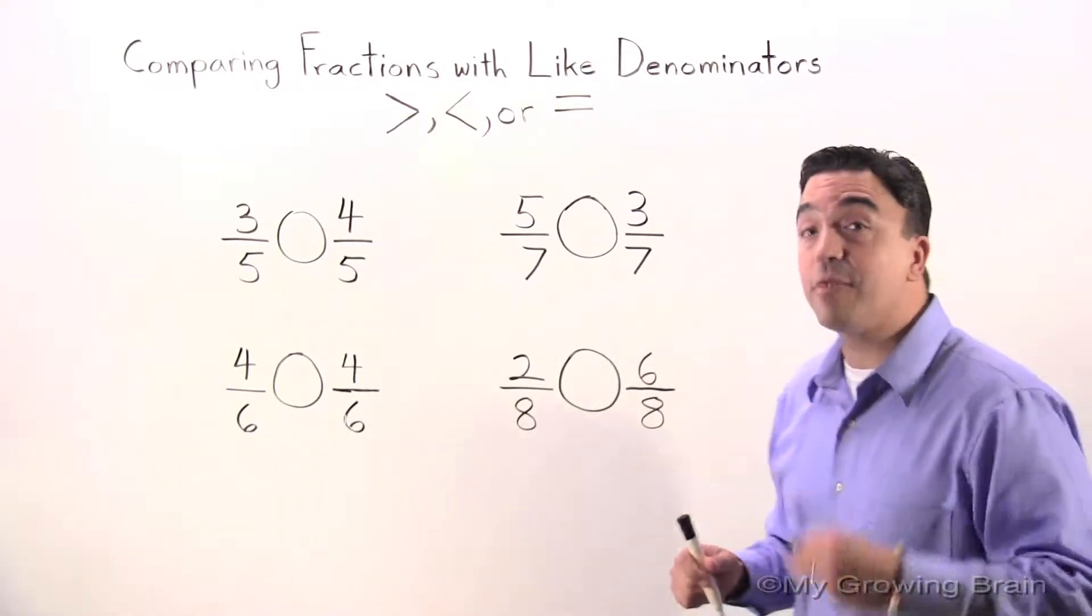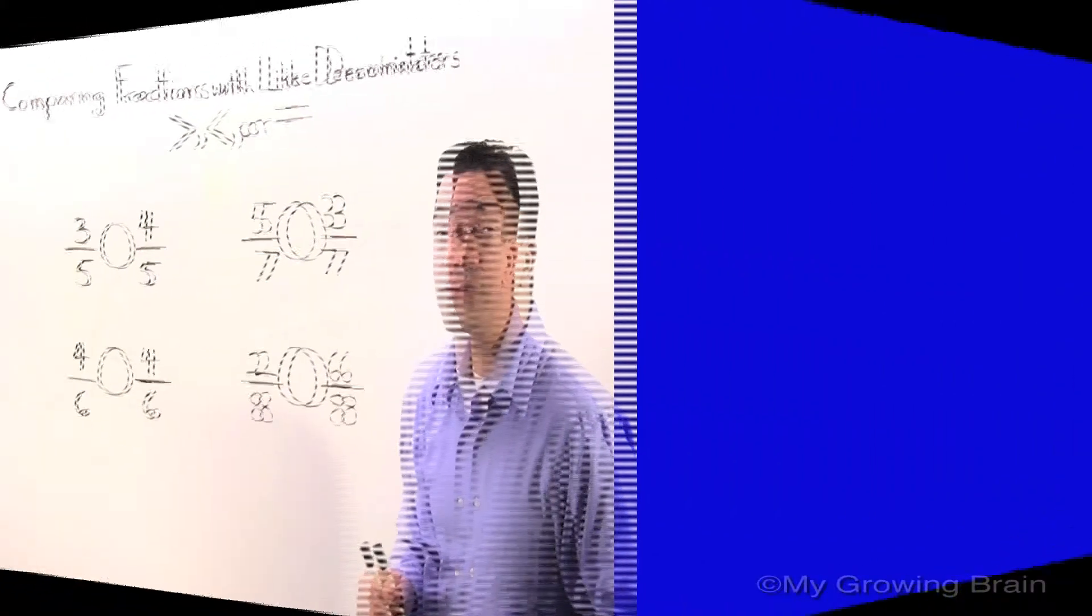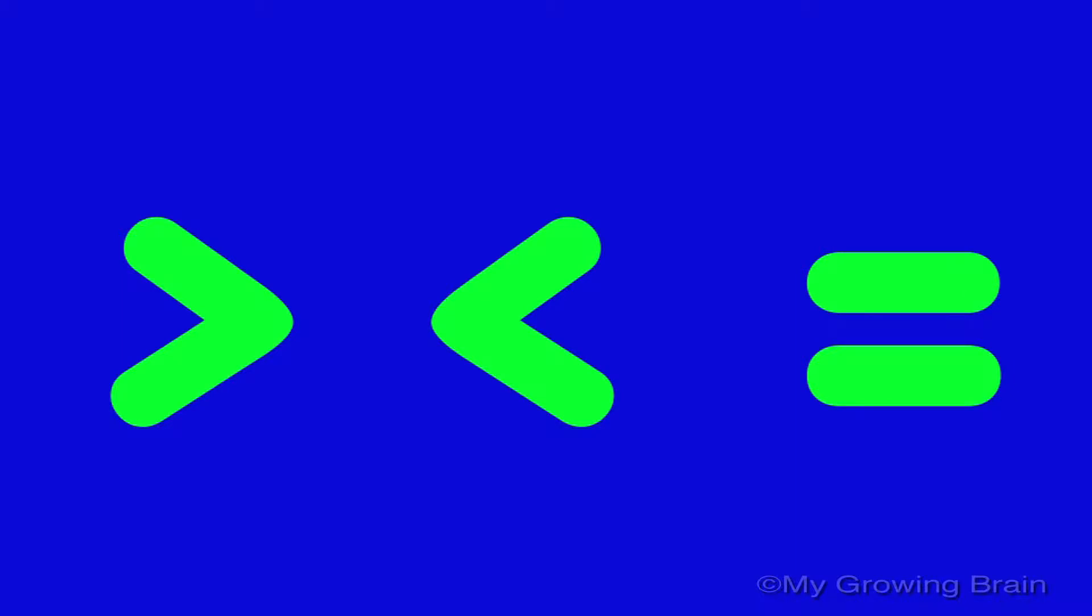If you look on the board I have three symbols: the greater than symbol, the less than symbol, and the equal to symbol.